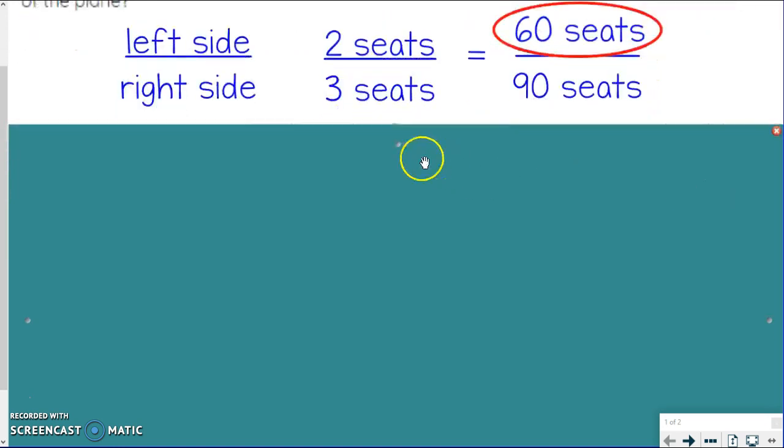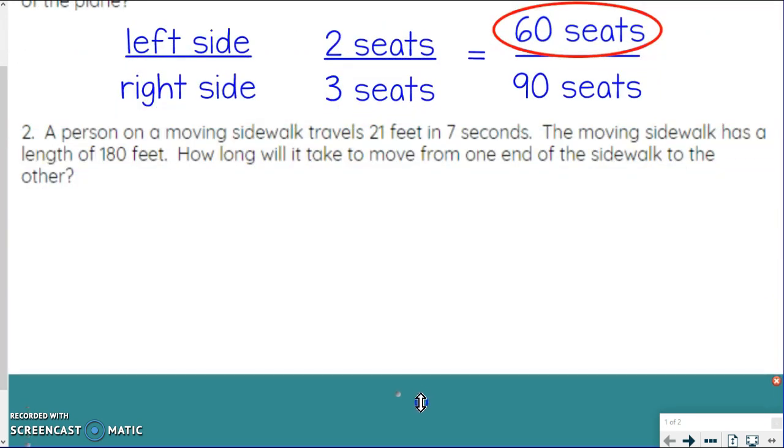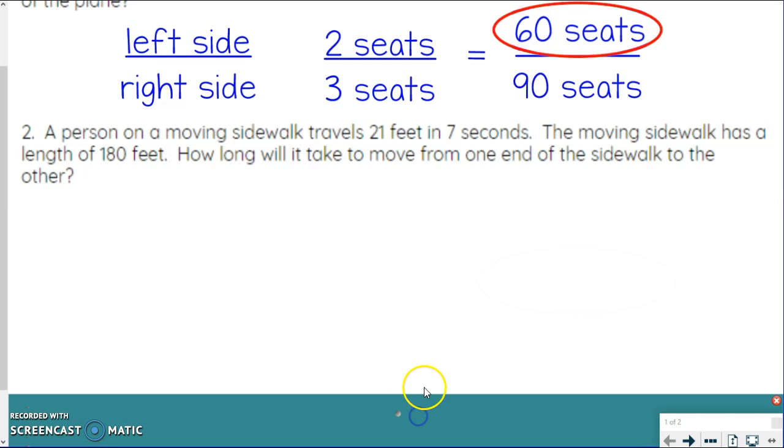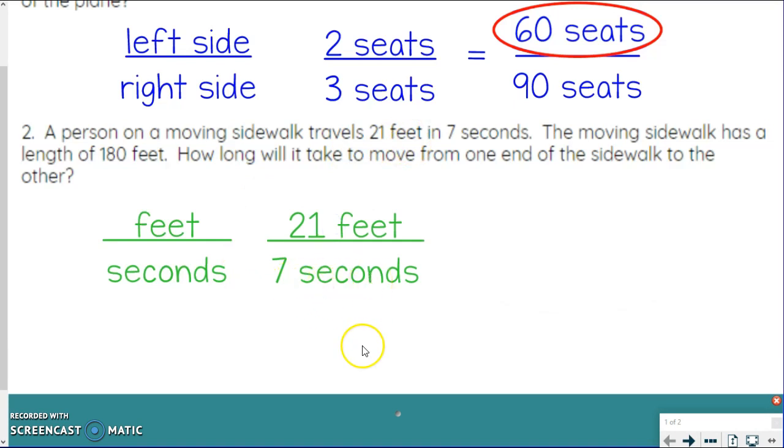Let's try one more together. Now we've got: a person on a moving sidewalk travels 21 feet in 7 seconds. The moving sidewalk has a length of 180 feet. How long will it take to move from one end of the sidewalk to the other? The two things we're comparing—that's always what we want to start with—is feet and seconds. I'm gonna put feet over seconds, and then we're gonna set up the original rate they give us, which is 21 feet in 7 seconds.